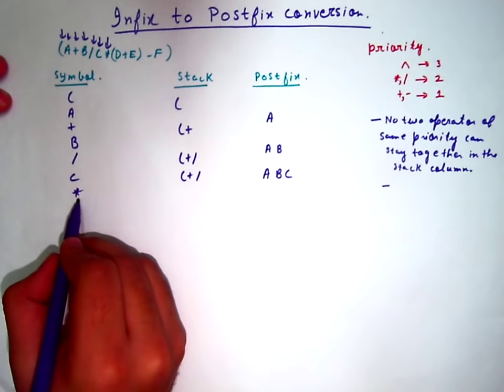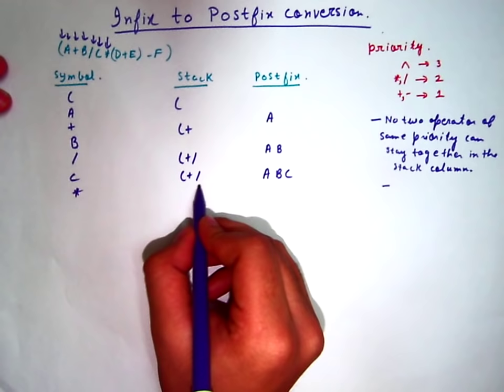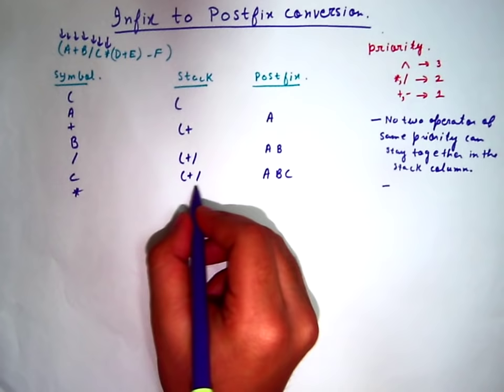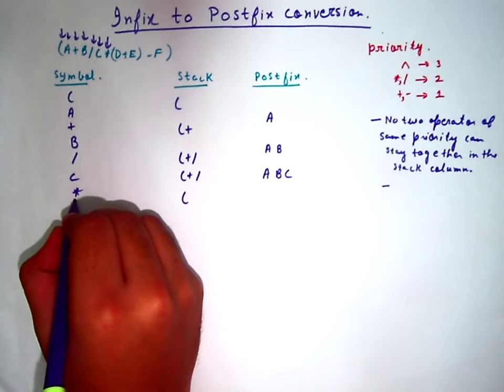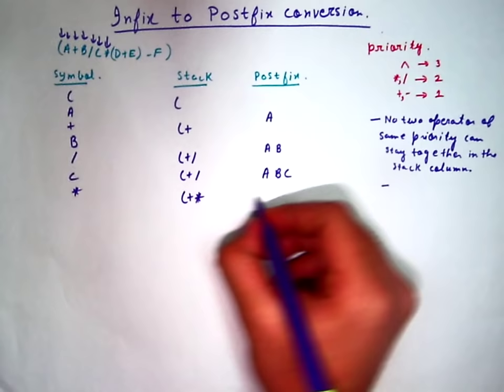Next comes the multiplication operator. See that the multiplication operator and the division operator have the same priority. No two operators of the same priority can stay together. So the operator which was here before would be popped out from the stack, and a star would be pushed into the stack. This division popped out from the stack and added to the postfix column.